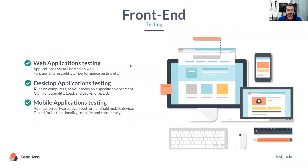On the front end, as you can see here, those are all different platforms that we humans interact with. Web applications, for example — whatever we use in browsers, we can check functionality, usability, and all the rest of the types of testing that we covered in the beginning of this course. And then desktop applications, that's another different world.